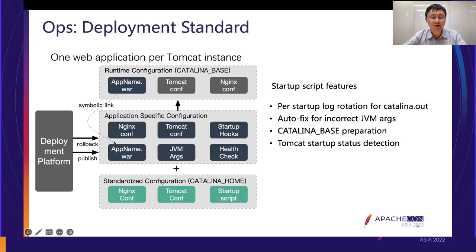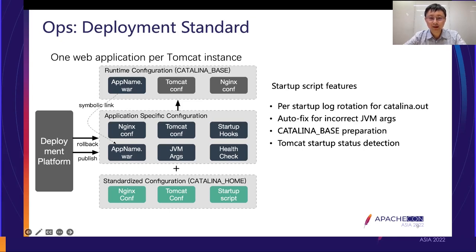Let's talk about deployment standards. At Alibaba, we have established a standard for every application deployment. Tomcat is installed along with a reverse proxy called Nginx, and each application has its own specific configuration. We also made minor enhancements to the startup script, including automatically fixing incorrect JVM arguments — for example, if you specify a heap size larger than the virtual machine's memory, it will automatically correct it and suggest the right value so the process won't be killed by the OS.